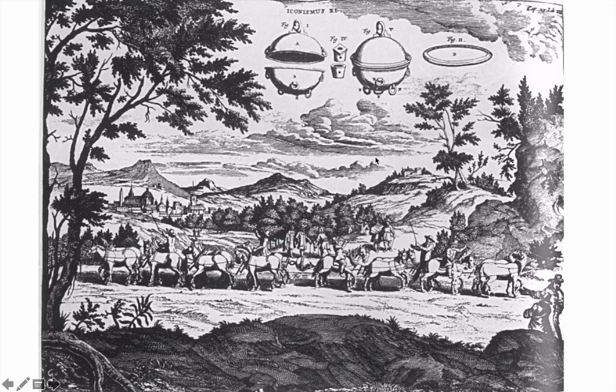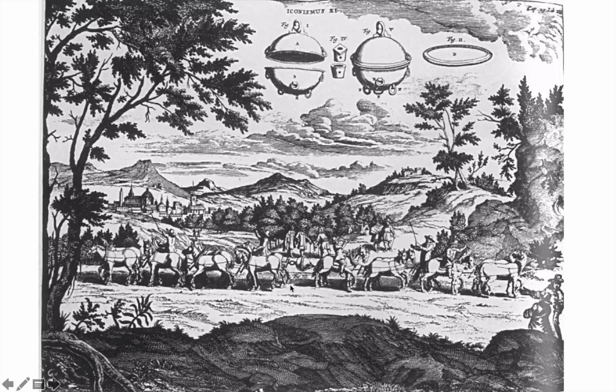I'm going to take you to the 1600s in Germany. We see a scene with 16 horses — eight on each side — pulling on two spheres called Magdeburg spheres. The person performing this demonstration was Otto von Guericke. This scientist had invented a vacuum pump and wanted to prove how powerful it was. He connected the two half-spheres to his pump and began to suck the air out from the inside, removing better than 90% of the atmospheric pressure.